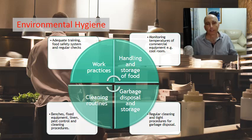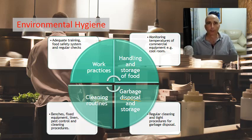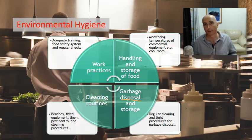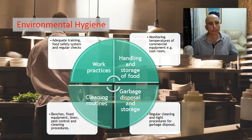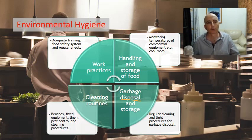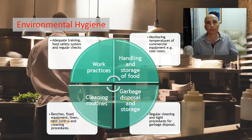The next area is the garbage area and storage. It's really important that there are regular routines to move the garbage out and that garbage areas are kept clean, otherwise we get vermin like cockroaches and rats coming into the restaurant which will cross contaminate our food. Cleaning routines on benches, fixed equipment, large and small, making sure linen is cleaned properly, and also making sure that pest control within the restaurant is done regularly is so important.